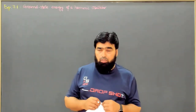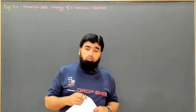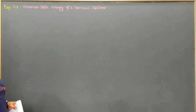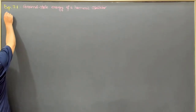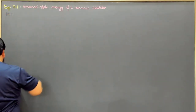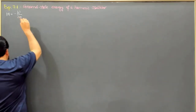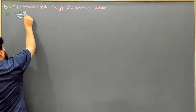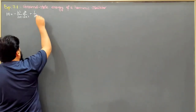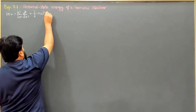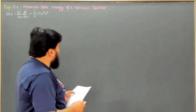We are now going to solve example 7.1, where we find the ground state energy of a one-dimensional harmonic oscillator. We know the Hamiltonian is the sum of kinetic energy and potential energy. For a harmonic oscillator, this is minus h-bar squared over 2m times d-squared over dx-squared, plus the potential energy half m omega squared x squared, which was studied in chapter 2 of quantum mechanics.